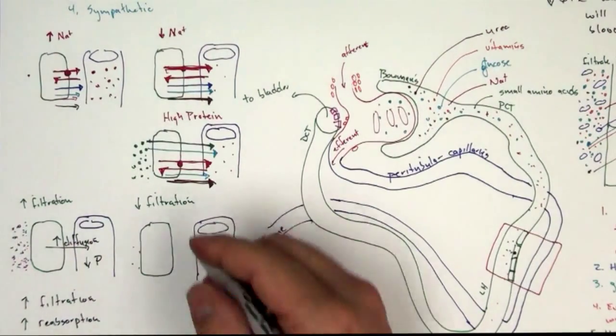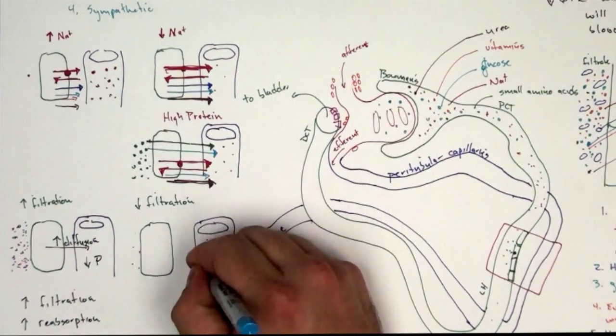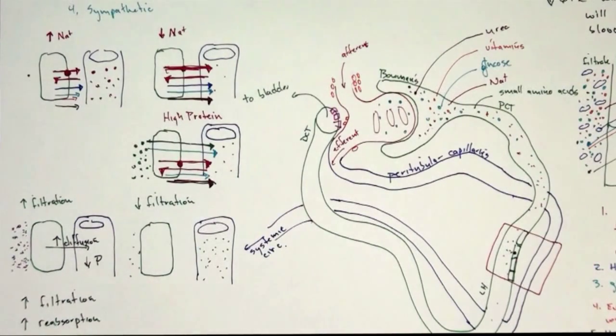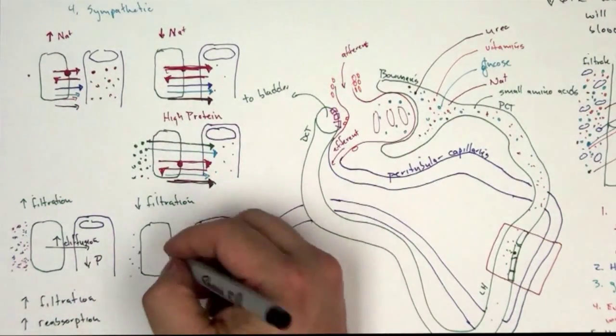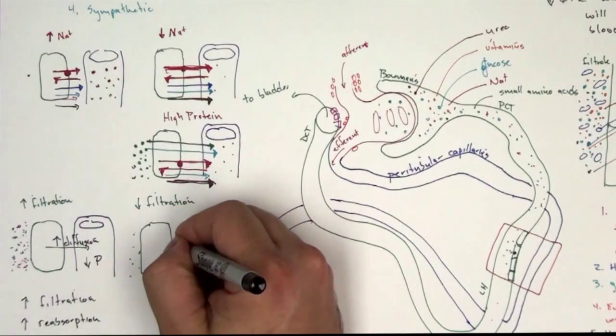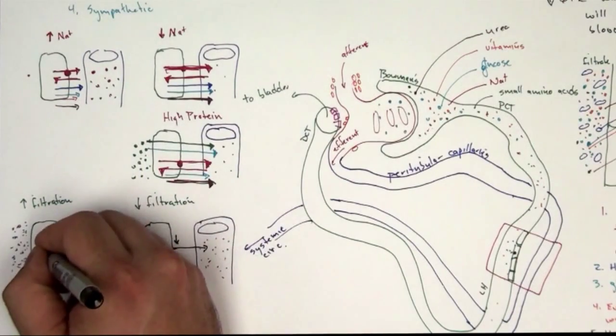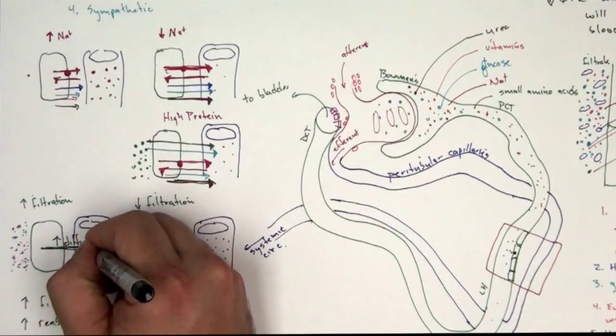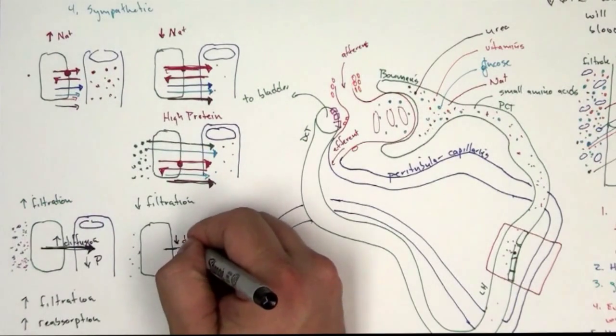So stuff like glucose is already over here. Well in this case, we're going to decrease—I should have drawn my arrow small, let's make this one really big—we're going to decrease diffusion.